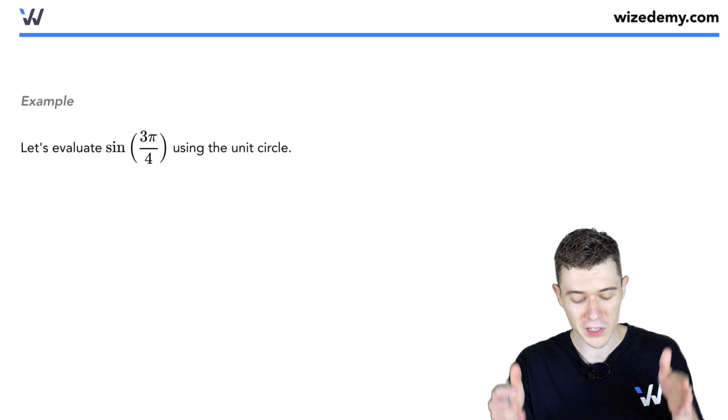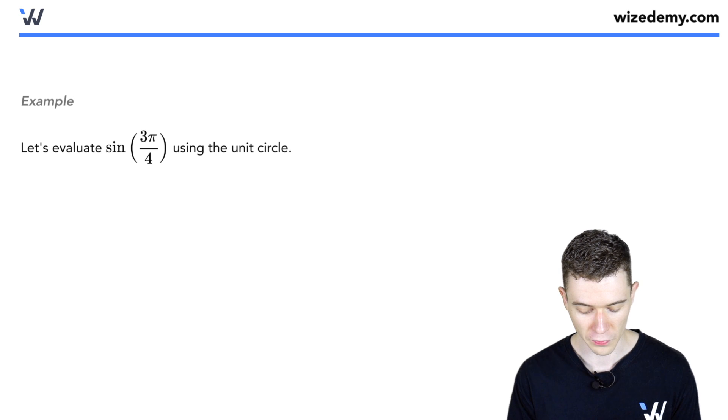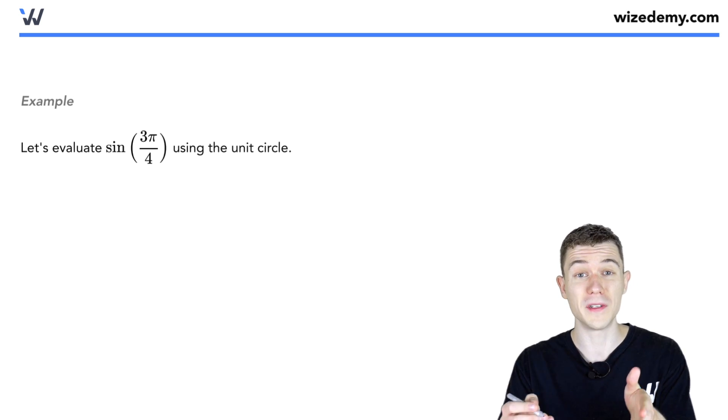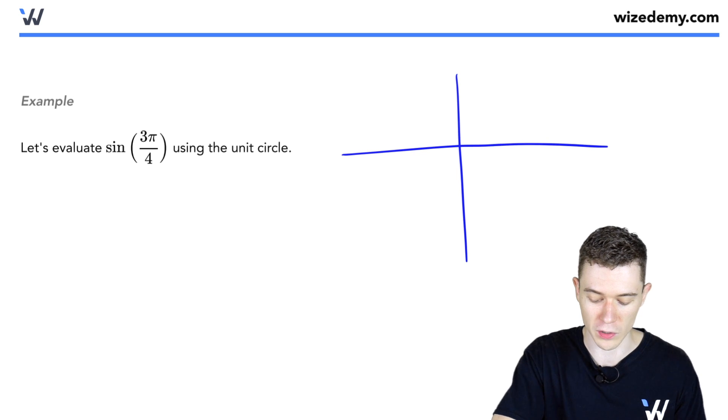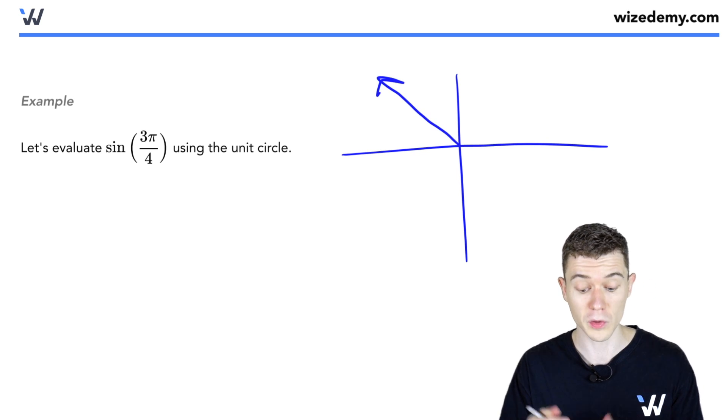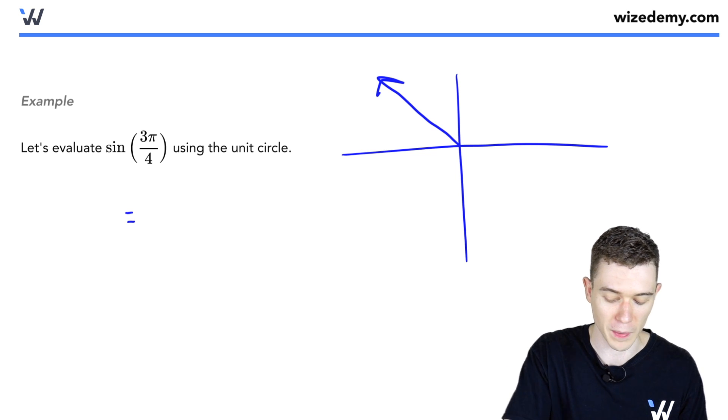Let's quickly evaluate this trig function, sine of 3 pi over 4. 3 pi over 4, if you take a look on our unit circle, that will end up in the second quadrant. 3 pi over 4 is over here. So in the second quadrant, sine is positive. We know our answer should be positive.